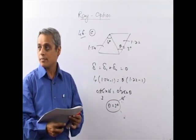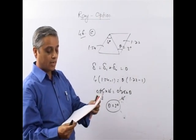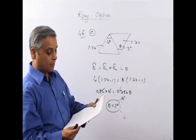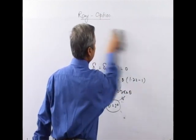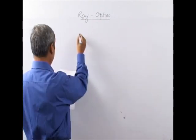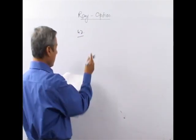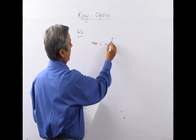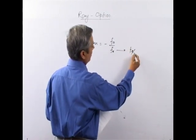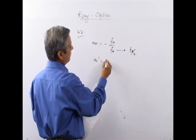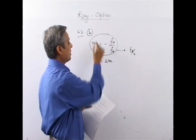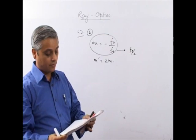Question number 47: The minimum magnifying power of a telescope is M = −F_o/F_e. If the focal length of the eye lens is halved, the magnifying power becomes M' = −F_o/(F_e/2) = 2M. The answer is B: 2M.